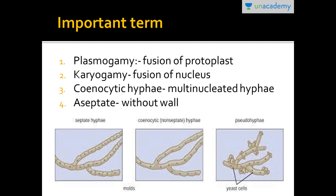Here are some important terms in Kingdom Fungi. Plasmogamy is the fusion of protoplasts during sexual reproduction. Karyogamy is when their nuclei get fused. There is also an intermediate state called dikaryosis, in which two nuclei are present in one cell. Karyo means nucleus and gamy means fusion, so karyogamy means fusion of nuclei, and plasmogamy means fusion of protoplasts.